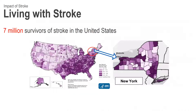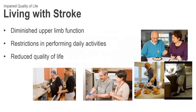Stroke is the fifth largest cause of death and a leading cause of long-term motor disability in the United States, and there are about 7 million survivors of stroke residing in the United States. Stroke can lead to diminished upper limb function, restriction in performing daily activities, and reduced quality of life.